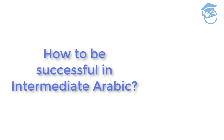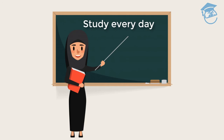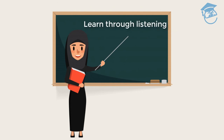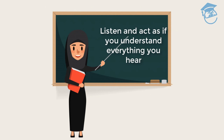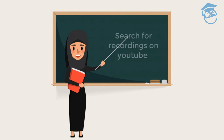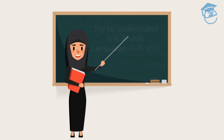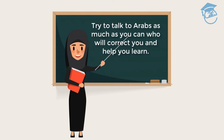Our final topic is how to be successful in intermediate Arabic. The most important thing is to study something in Arabic every single day. You must read as much as you can — start by reading small books on different issues in Arabic, take a notepad, and write new words down. When you look up a word in the dictionary, underline it with a pencil. You must also learn through listening; in this way you learn how Arabic is spoken and how certain ideas are conveyed. The best approach is to listen and act as if you understand everything you hear. If you can't find a native Arabic speaker giving a talk, find recordings on YouTube — they're readily available. Try to understand the Arabic language in Arabic; don't only translate everything into your own native tongue. This will take time, but it's very important. Try to talk as much as you can to Arabs who will correct you and help you in learning.